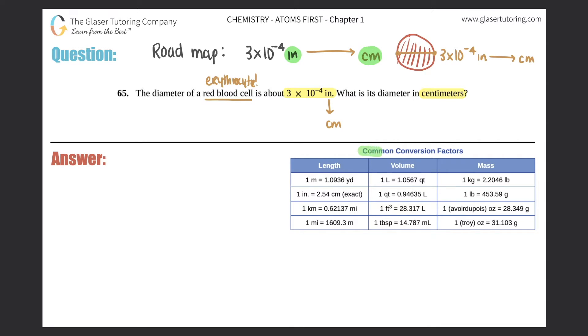I say, do I know a conversion factor between inches and centimeters directly? Well, let's look at our handy dandy common conversion factor chart. We're talking about units of length, so I'm going to be looking in the length category. And look at the second one down—it says 1 inch equals 2.54 centimeters.